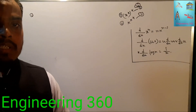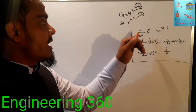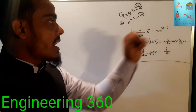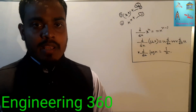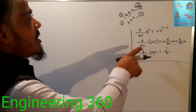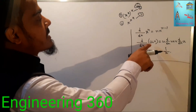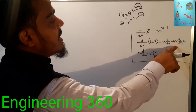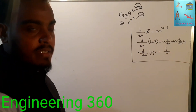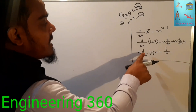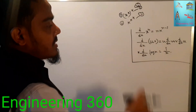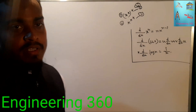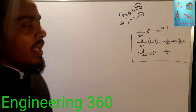The key formulas we will use: d/dx of x to the power n equals n times x to the power n minus 1. The product rule: d/dx(u·v) = u·d/dx(v) + v·d/dx(u). And d/dx of log x equals 1 by x. These are our core differentiation rules.